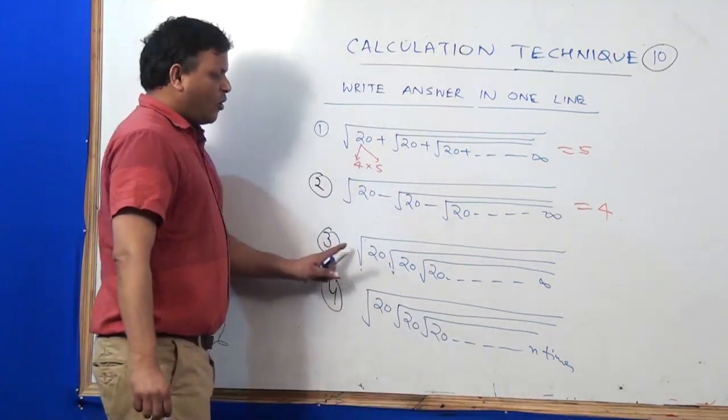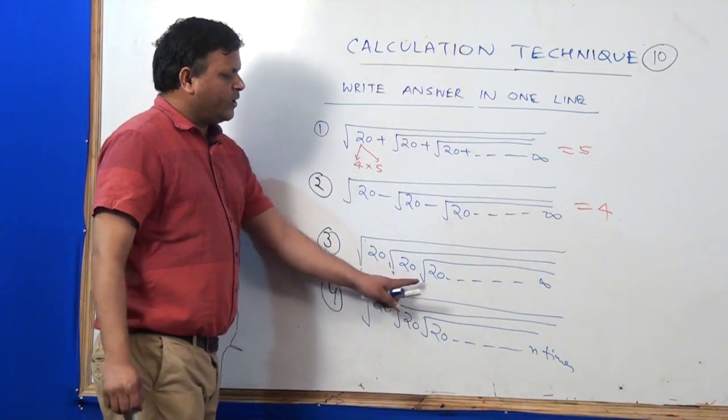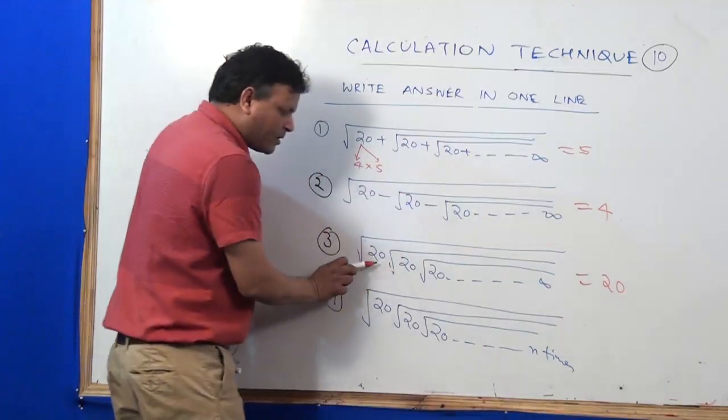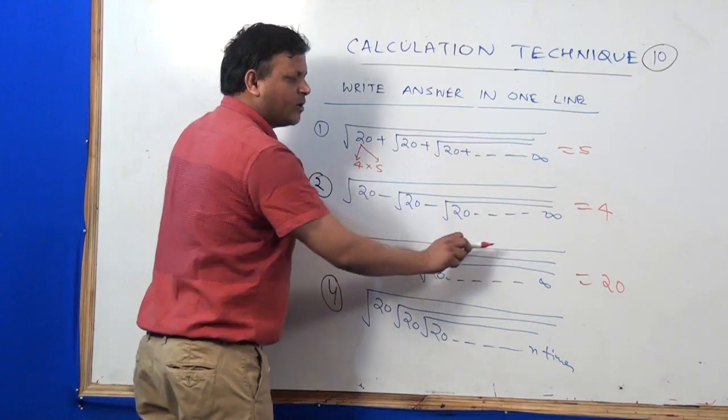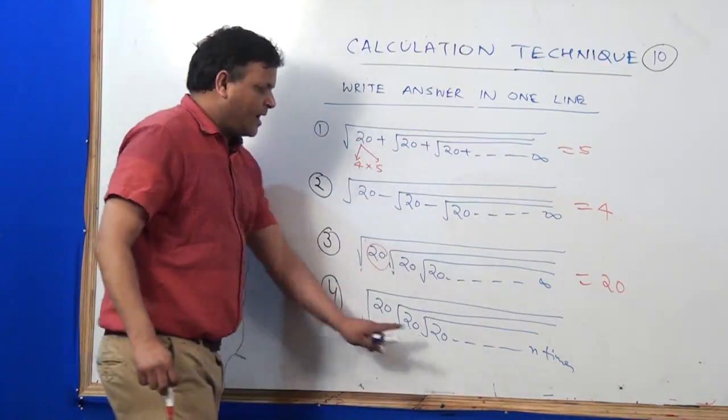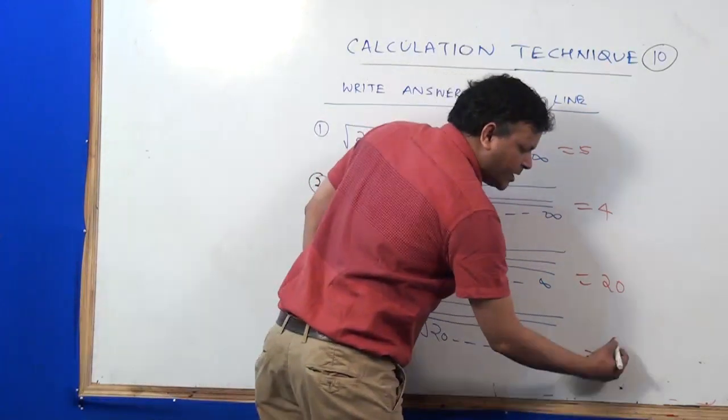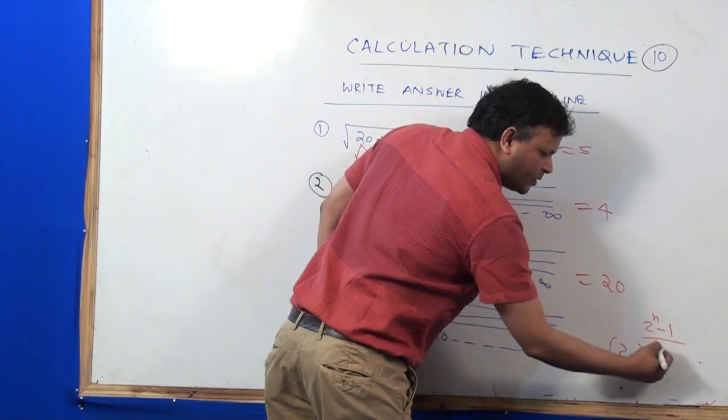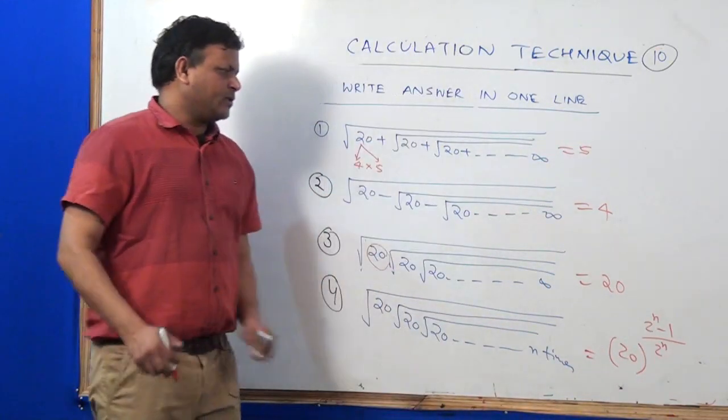And if it is root 20 into root 20 into root 20 into infinite, this answer will be 20. That is the number which will multiply under the root. If it is n times, this value will be 2 to the power n minus 1 by 2 to the power n. These are 4 things.